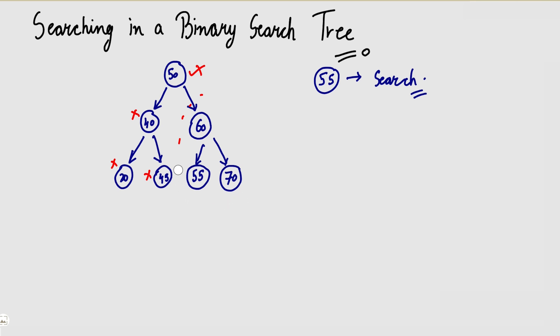And if this BST is very big, how easy it will be to search in it — that is the advantage BST offers us. So what is the time complexity to perform this search operation? How do we know what the time complexity is to perform this operation?